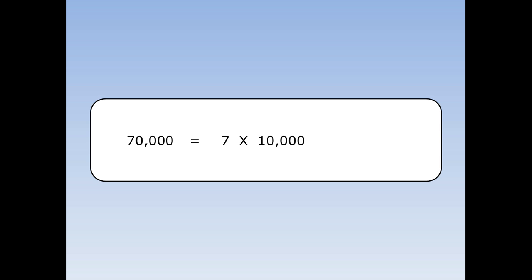What's seventy thousand in standard form? Seventy thousand is seven times ten thousand, which is equal to seven times ten to the power of four. Seven is between one and ten, times ten to the something — this is standard form.